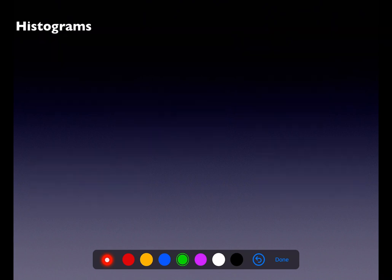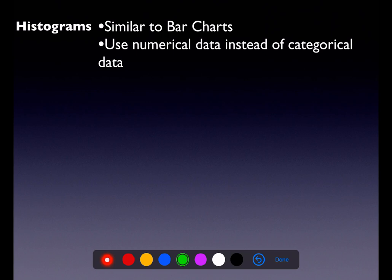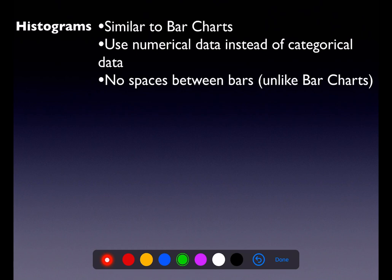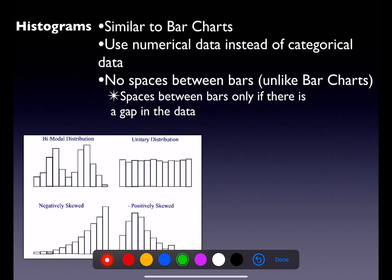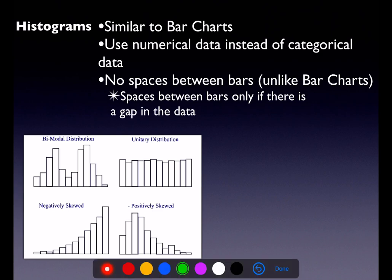Okay, so we also talked about histograms. Histograms, they look just like bar charts. They're a bunch of rectangles. They're similar, excuse me, they use numerical data instead of categorical data, that's it. But your variable is on your x-axis, frequency or relative frequencies along your y, and you got some rectangles. We typically don't have spaces between the bars, which is a little bit different from bar charts. The spaces only exist if there's a gap in the data. So here's some bar charts, excuse me, here's some histograms.